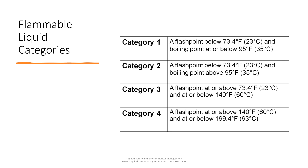Categories 1 and 2 are flammable, and Categories 3 and 4 are more commonly known as combustible liquids. So even though it's all called flammable liquid overall, it really has two separate meanings.